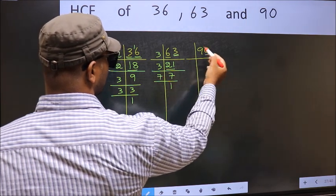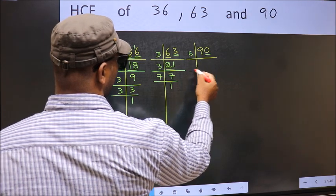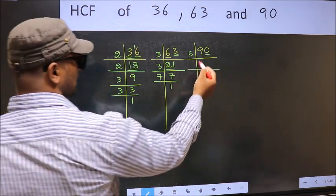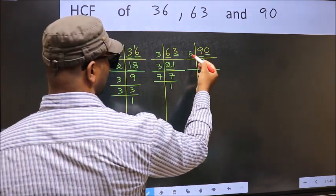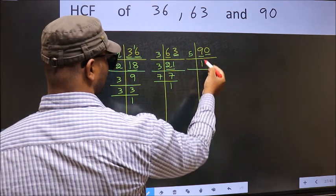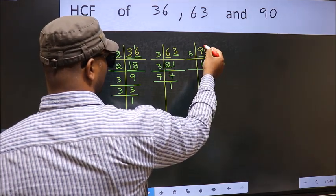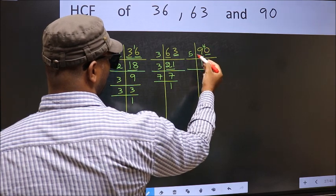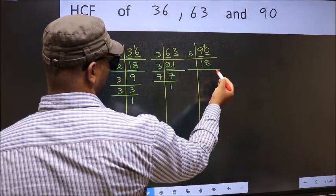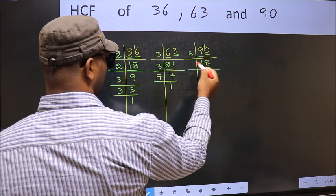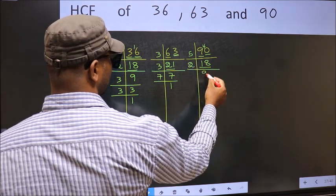Now the other number. Last digit 0, so take 5. First number 9. A number close to 9 in 5 table is 5 times 1, 5. 9 minus 5 is 4, carried forward 40. When do we get 40 in 5 table? 5 times 8 is 40. Now 18 is 2 nines, 18.